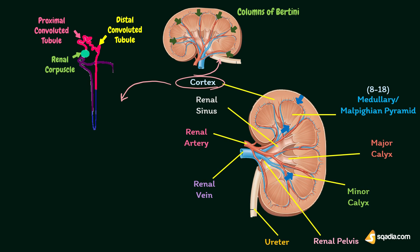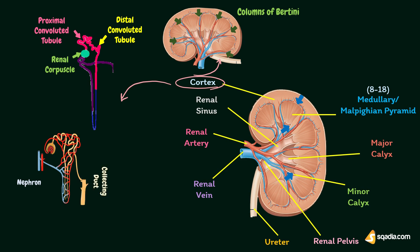Now let's discuss the tubular structures of kidney. Kidney is made up of closely arranged tubular structures called uriniferous tubules. Blood vessels and interstitial connective tissues are interposed between these tubules. Uriniferous tubules include terminal or secretory tubules called nephrons, which are concerned with formation of urine, and collecting ducts or tubules, which are concerned with transport of urine from nephrons to pelvis of ureter. Collecting ducts unite to form ducts of Bellini, which open into minor calyx through papilla.